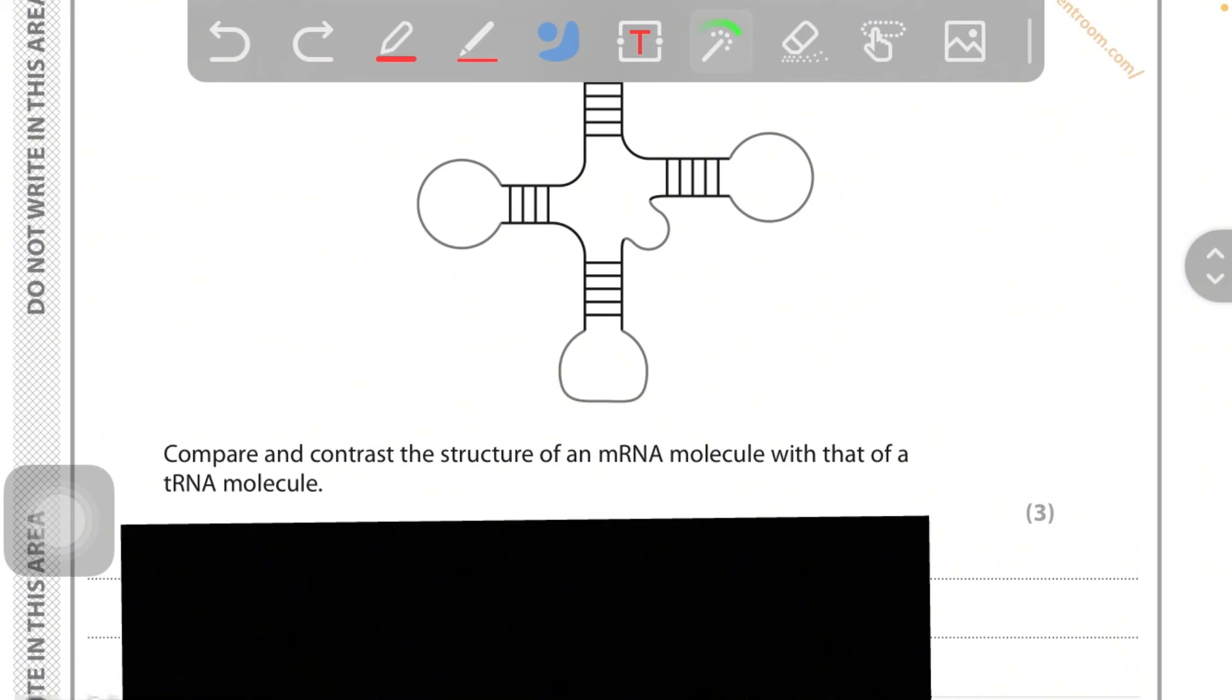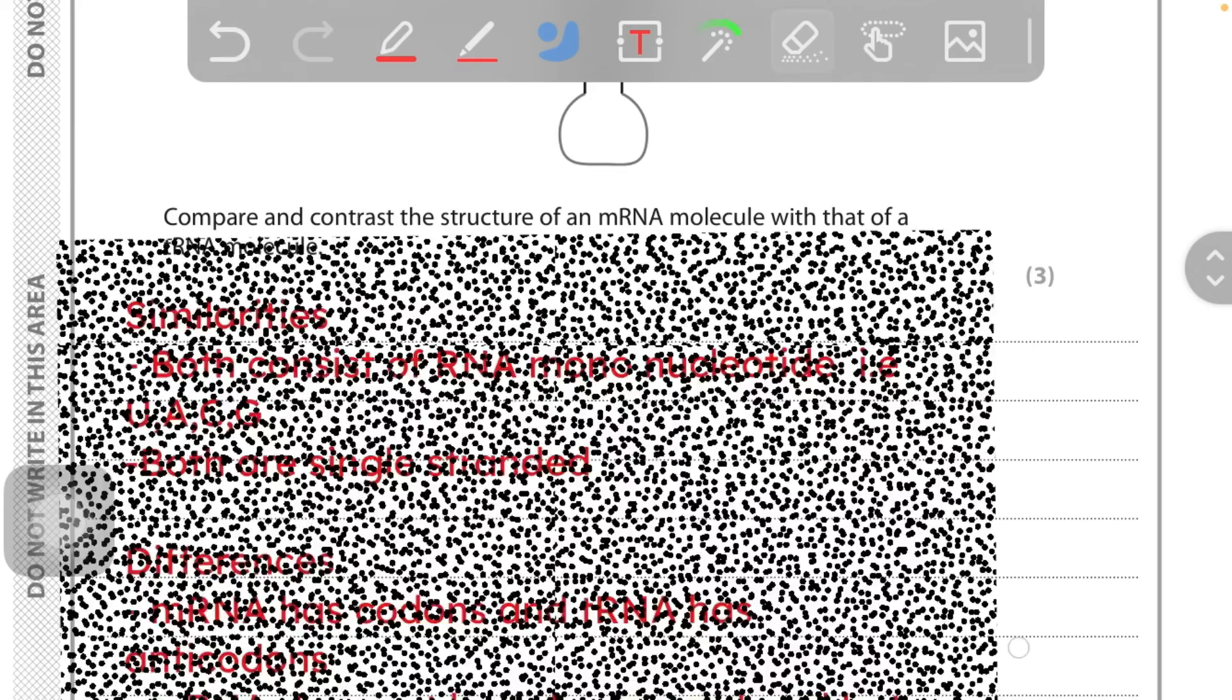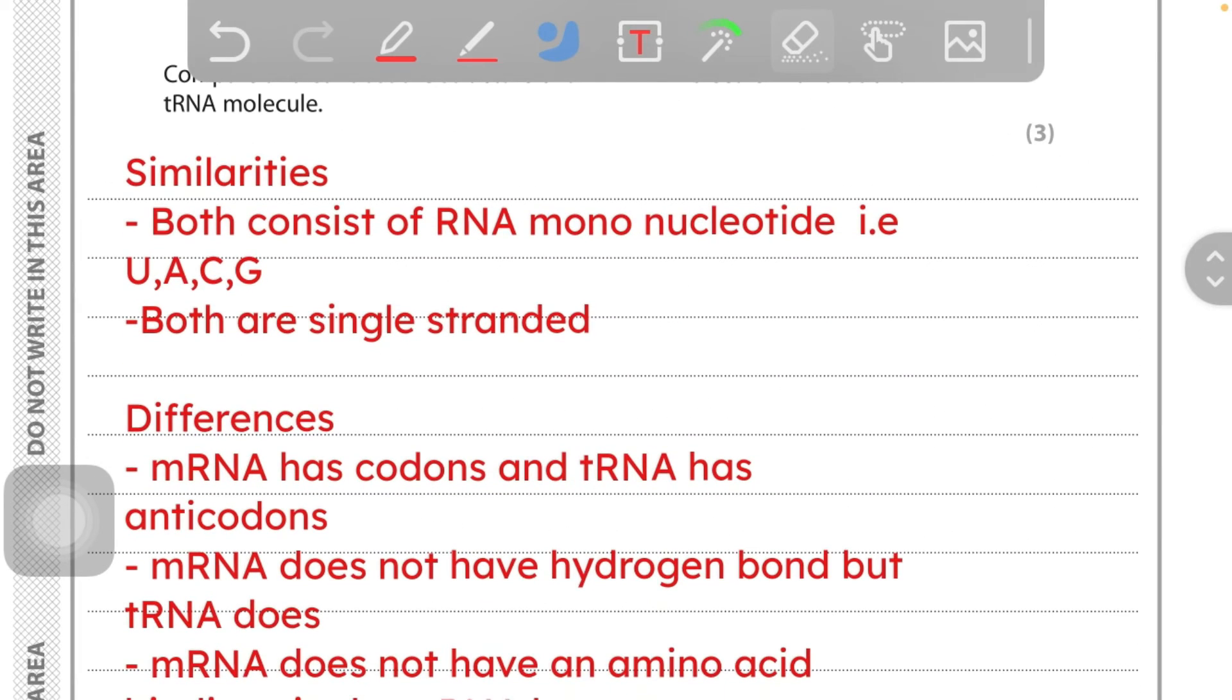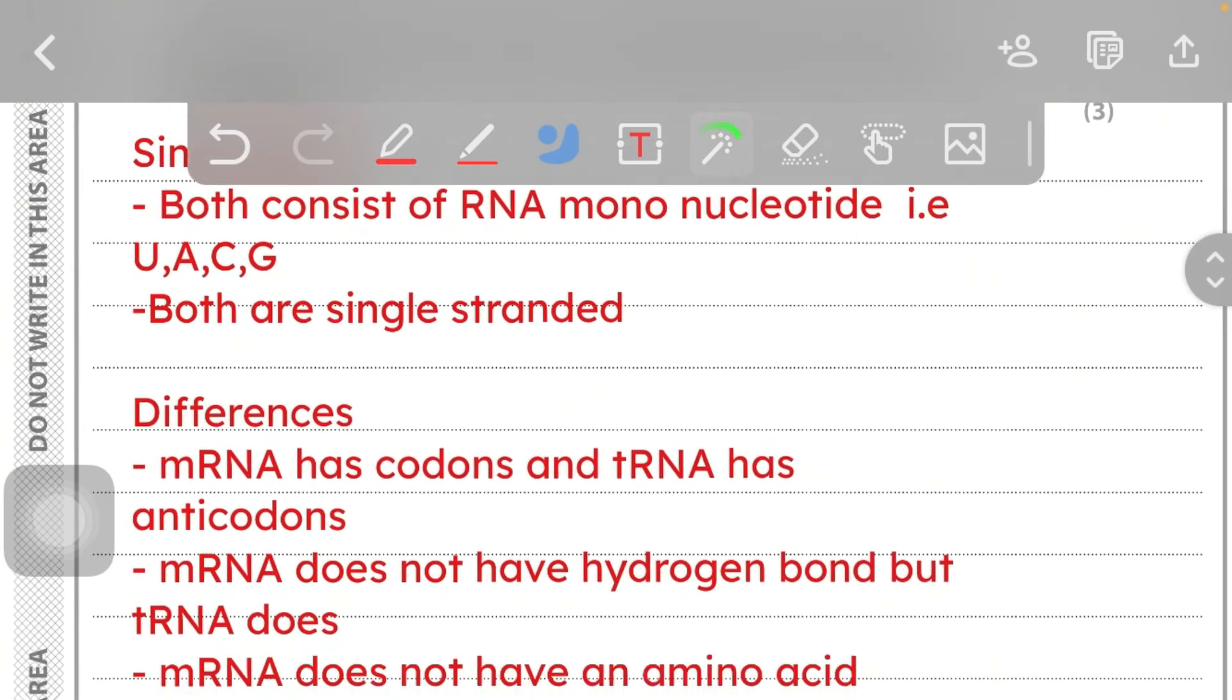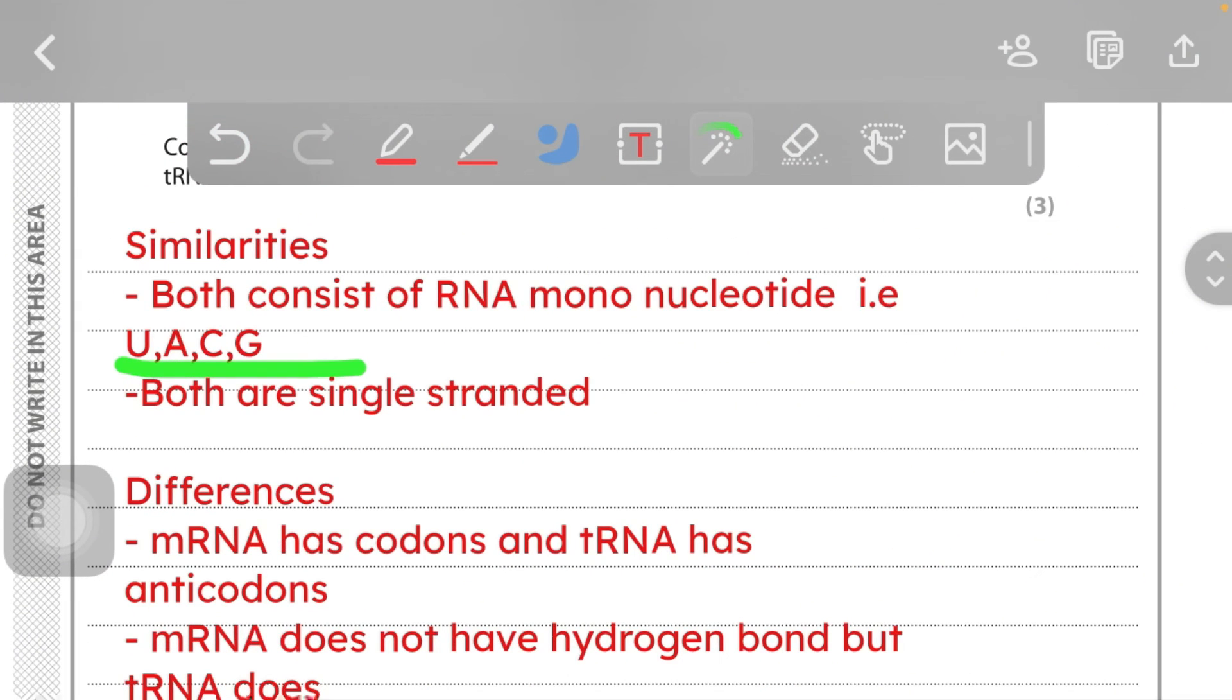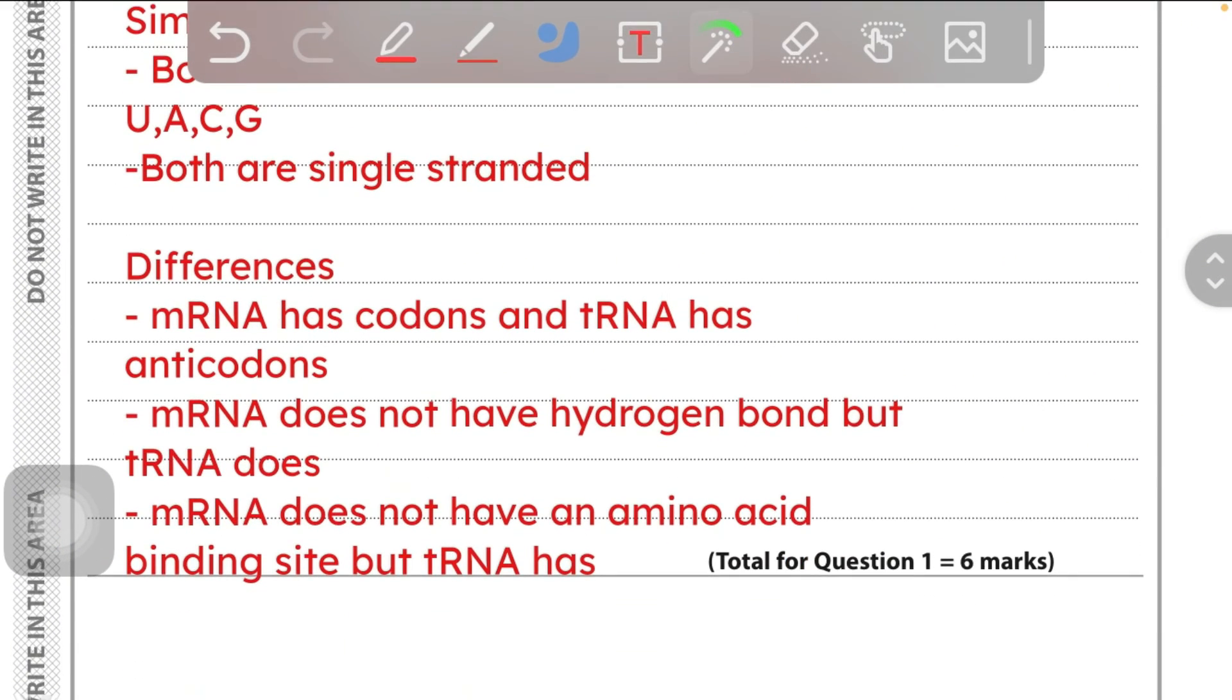Another one can be that both - you know RNA is a single-stranded molecule, right? So both the tRNA and mRNA are single-stranded. So here you go with some similarities and differences. Similarities: both consist of RNA mononucleotides, i.e. U, A, C, G. As I said before, T is not present in RNA molecule, it's replaced by U (uracil). Both are single-stranded.